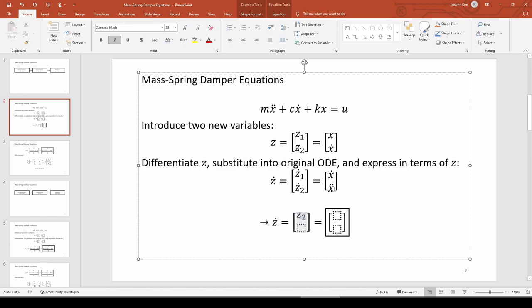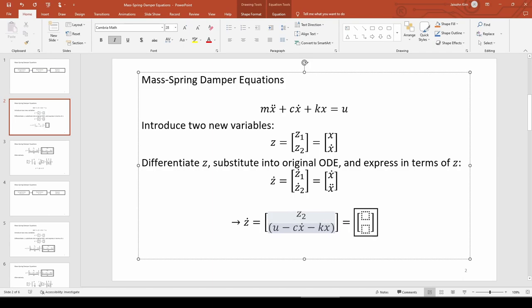Notice that we can get x double dot from the original ODE. If we do some quick algebra and solve for the x double dot term, we get the following. But we're still not done because we need to change all the x's to z's. We already established that z2 equals x dot and z1 equals x, so we can plug those in down here and further simplify the equation.